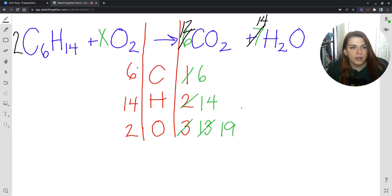Over here, I would have 12 carbons. And 2 times 14 is 28 hydrogens. I still have those 2 oxygens because I haven't done anything with that x coefficient yet. This carbon, I have 12 of them. The hydrogen is 14 times 2. That is 28.